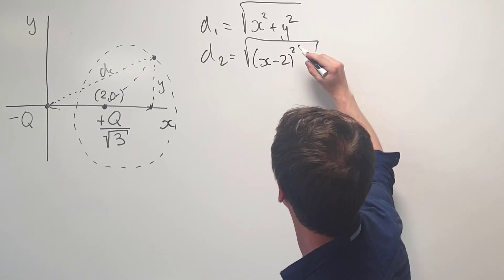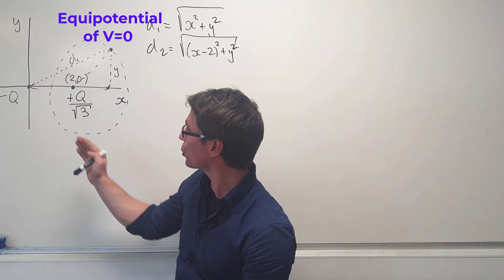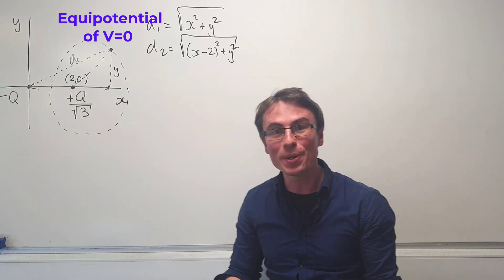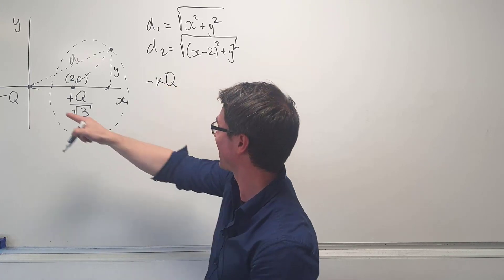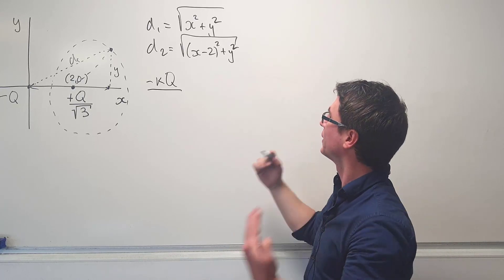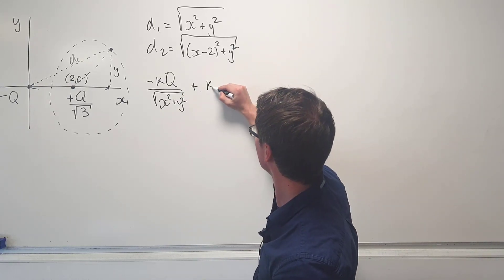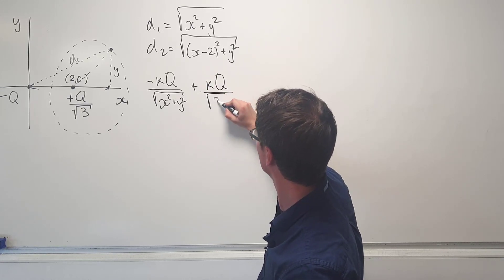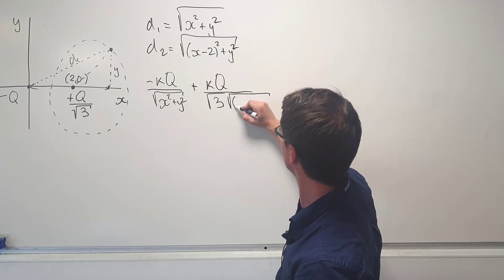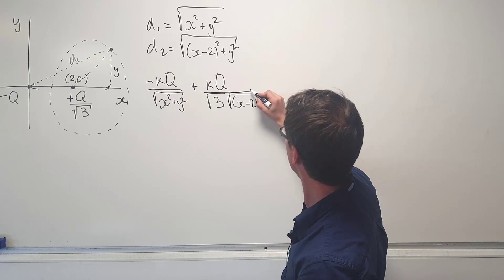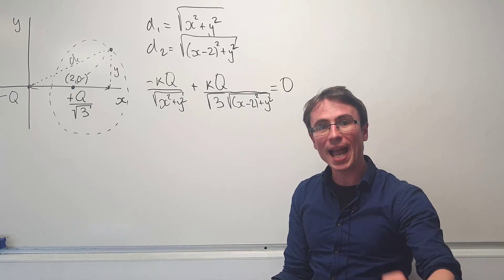So d2 equals the square root of (x minus two) squared plus y squared. Because this is an equipotential surface, we can add up the individual potentials from each charge and they will equal zero. The potential from the first charge equals some constant k multiplied by negative q over the square root of x squared plus y squared. The potential from the second charge equals k times q over root three, divided by the square root of (x minus two) squared plus y squared. When added up, the total should equal zero.